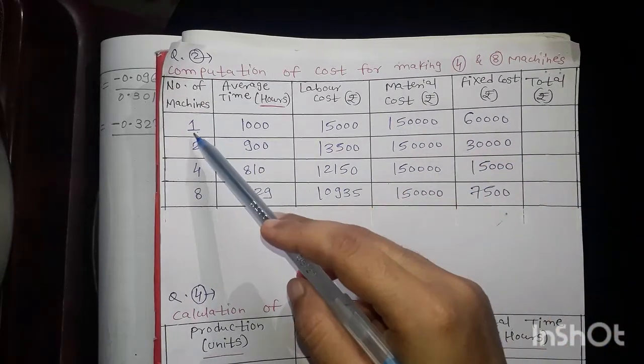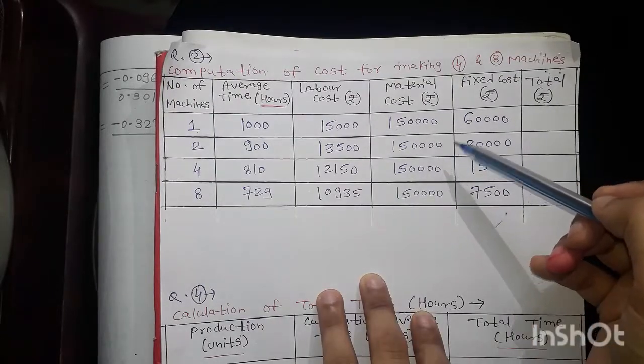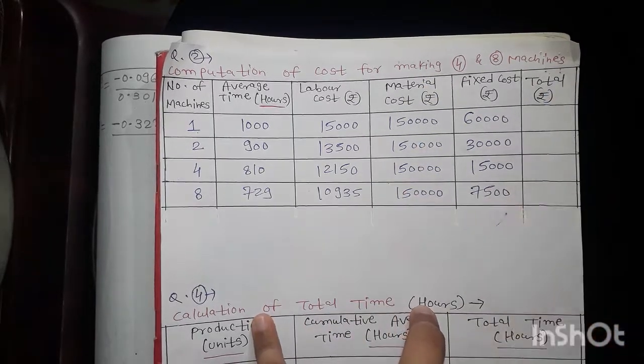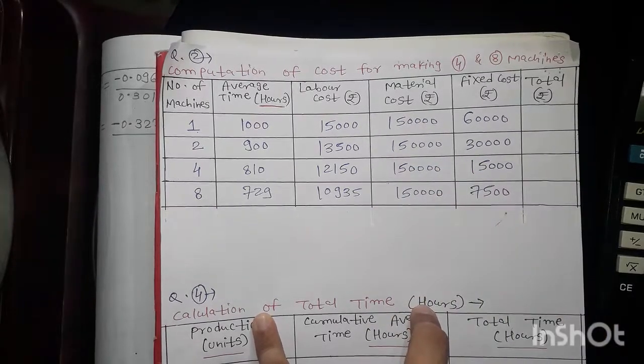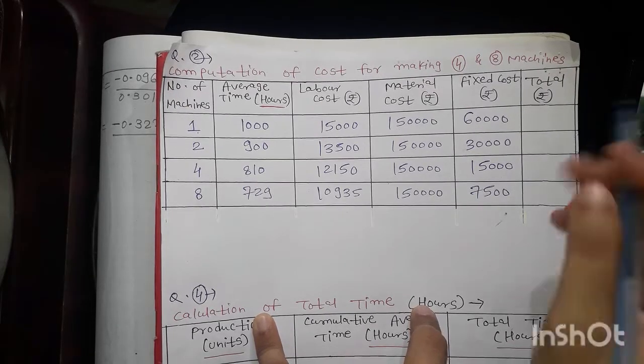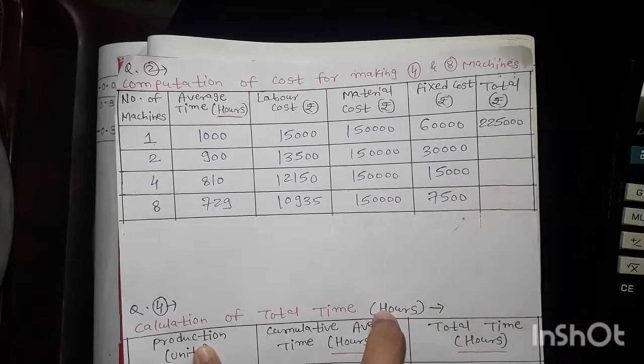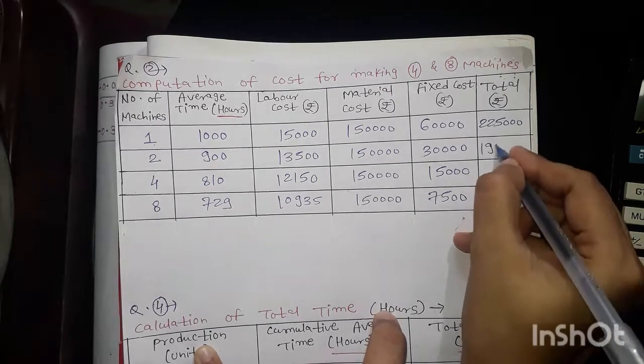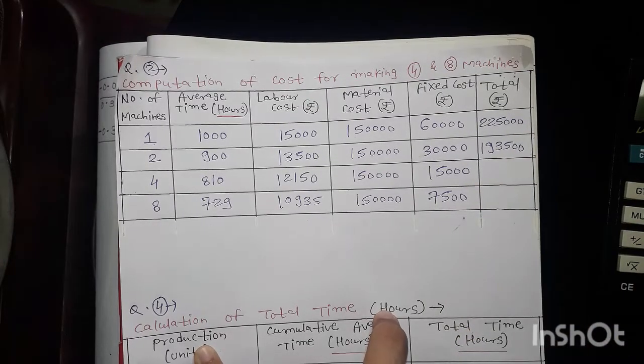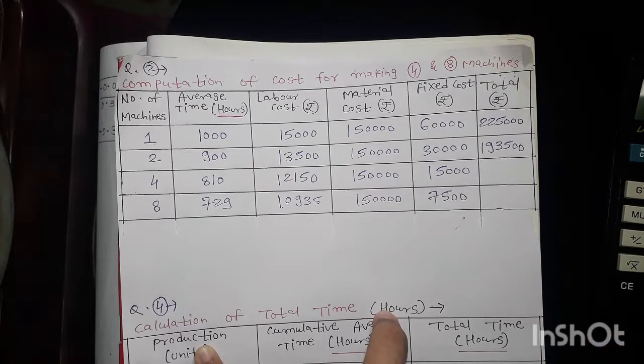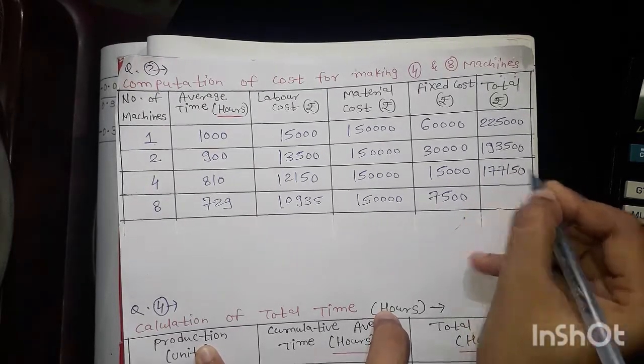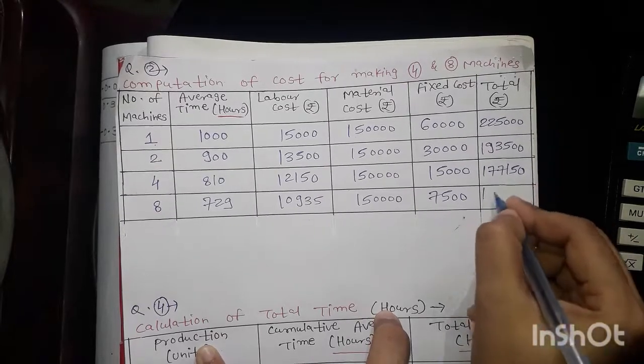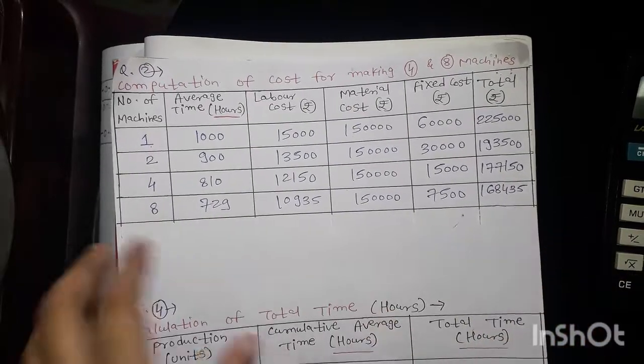So now we are finding cost. Now total cost only. First, second, third - total of these three. That is 15,000 plus 150,000 plus 60,000, it comes to 225,000. Next, 13,500 plus 150,000 plus 30,000, it comes to 193,500. Then 12,150 plus 150,000 plus 15,000, it comes to 177,150. Then 10,935 plus 150,000 plus 7,500, it comes to 168,435.